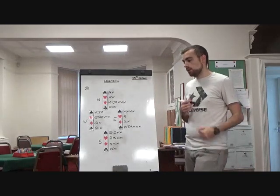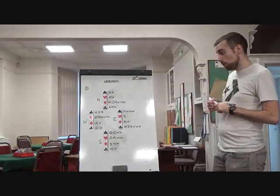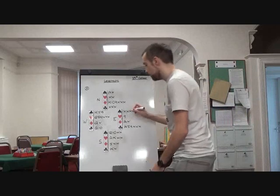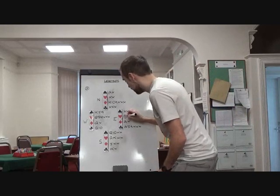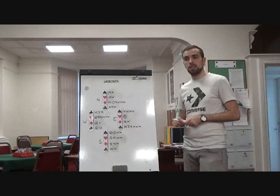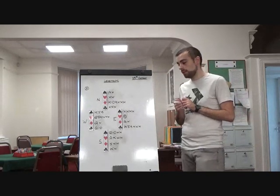So, 3 diamonds is the final contract, north is the declarer, so east is on lead. East is going to lead singleton of their partner's suit, hoping for their partner to have the ace, and immediately disappointed when they see dummy.